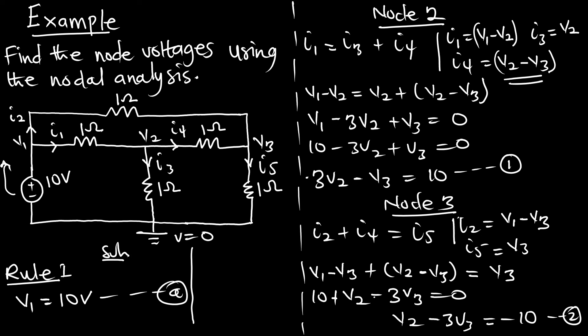Solving Equation 1 and Equation 2 simultaneously, V2 = 5 volts and V3 = 5 volts. We already have V1 = 10 volts, so the analysis is complete. The key things to remember are the super node — when a voltage source is between two non-reference nodes — and Rule 1, where a voltage source between a reference and non-reference node directly sets the voltage. I hope you now understand nodal analysis. Thank you for watching. Subscribe to the channel and check out the next episode.